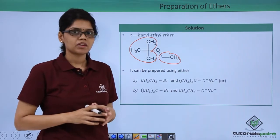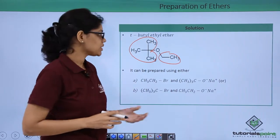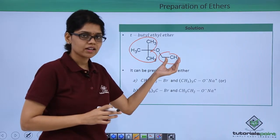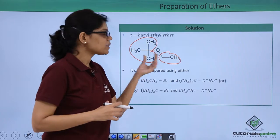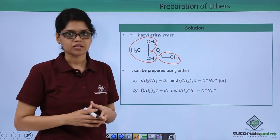Now this ether can be prepared via two methods: by using this as the alkyl halide and this as the alkoxide ion, or by using this part as the alkoxide ion and this as the alkyl halide.